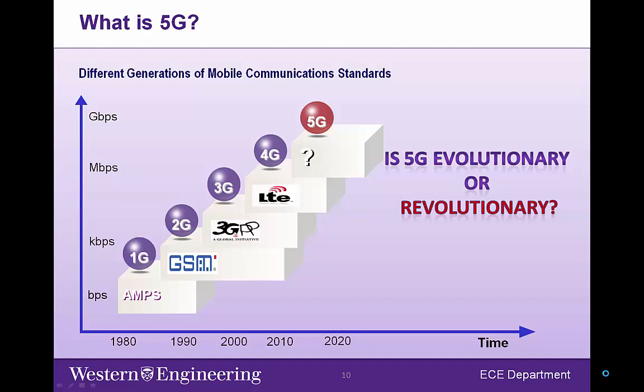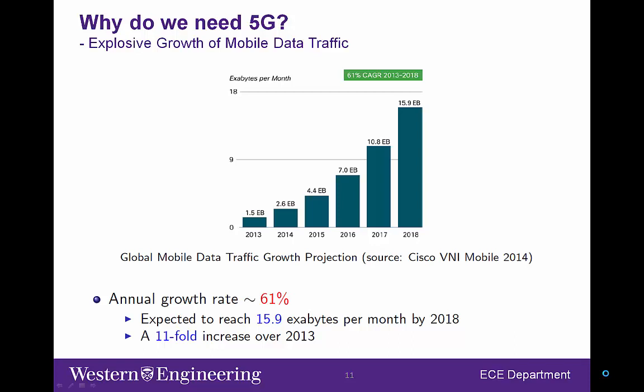As we can see from 1G to 4G, one of the main design objectives for mobile communications is to increase the communication bandwidth or capacity so that we can support more applications. As we are now entering the 5G era, the fundamental question is: will we continue this trend for 5G, or do we expect anything else? Is 5G evolutionary or revolutionary? To answer this question, let's look at the fundamental driving forces for 5G.